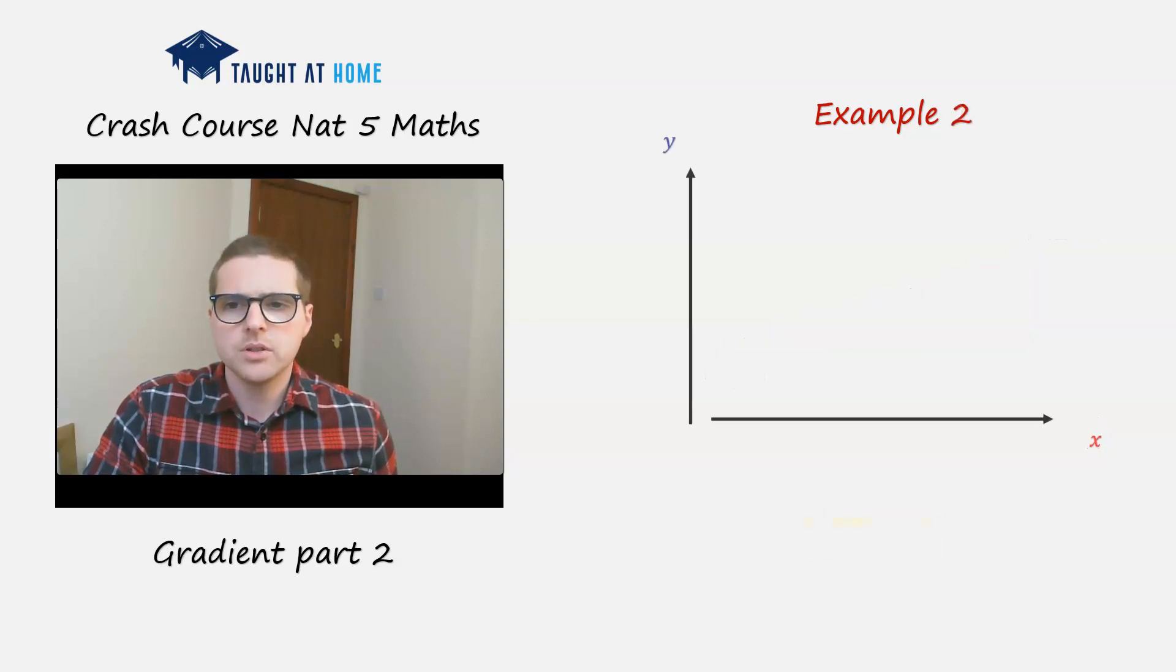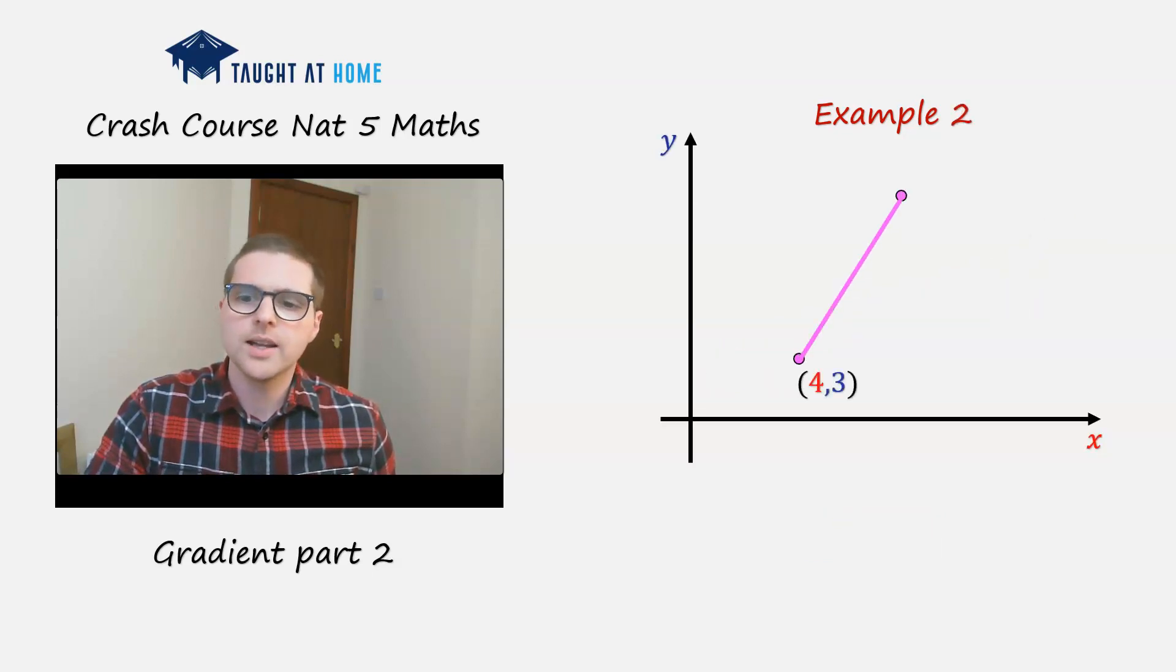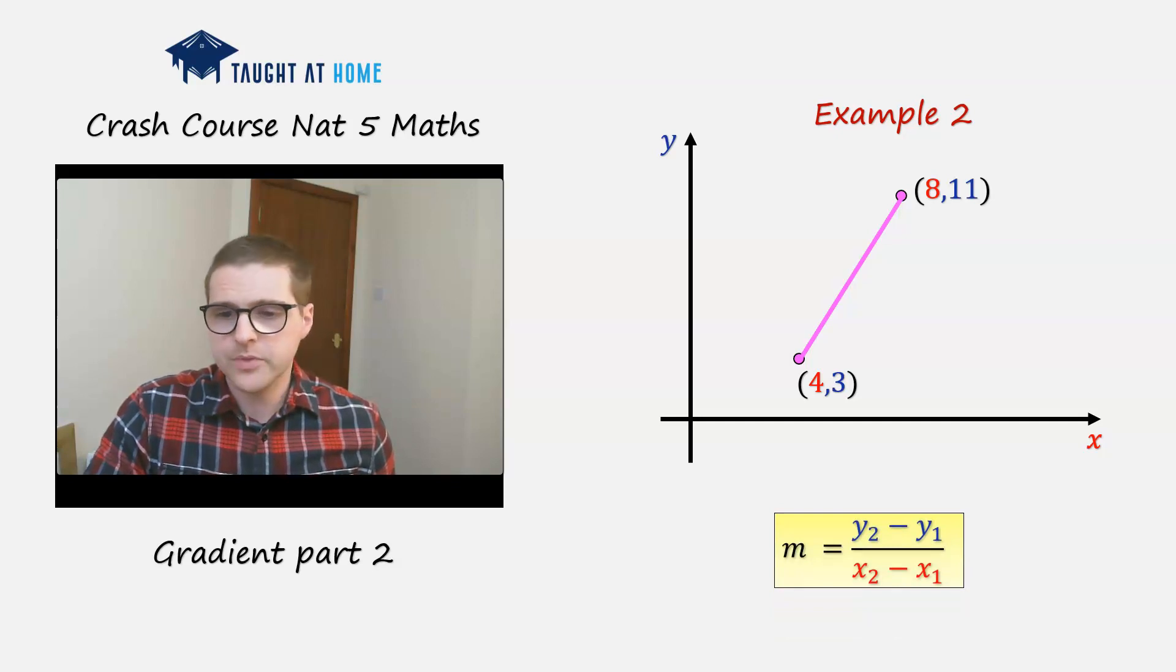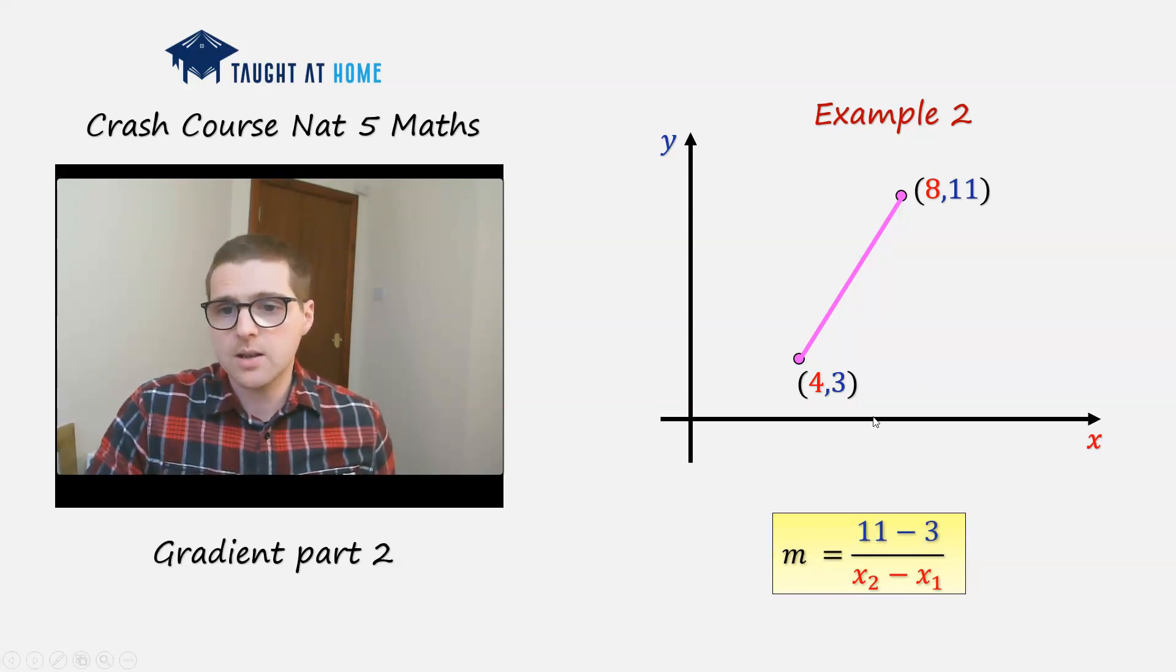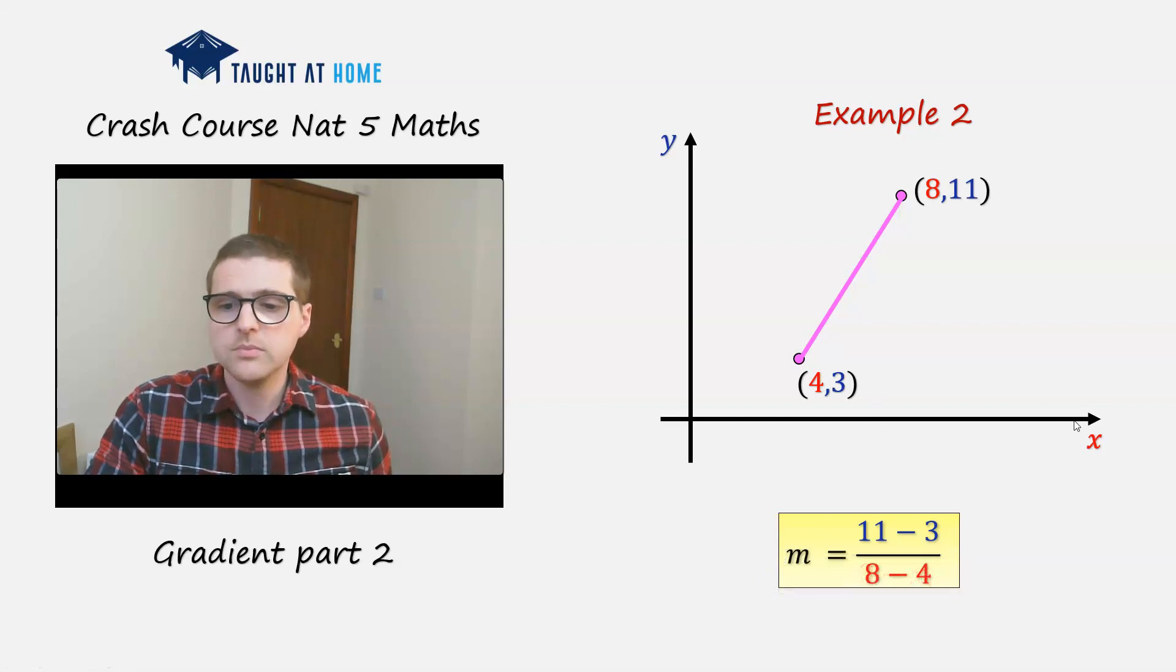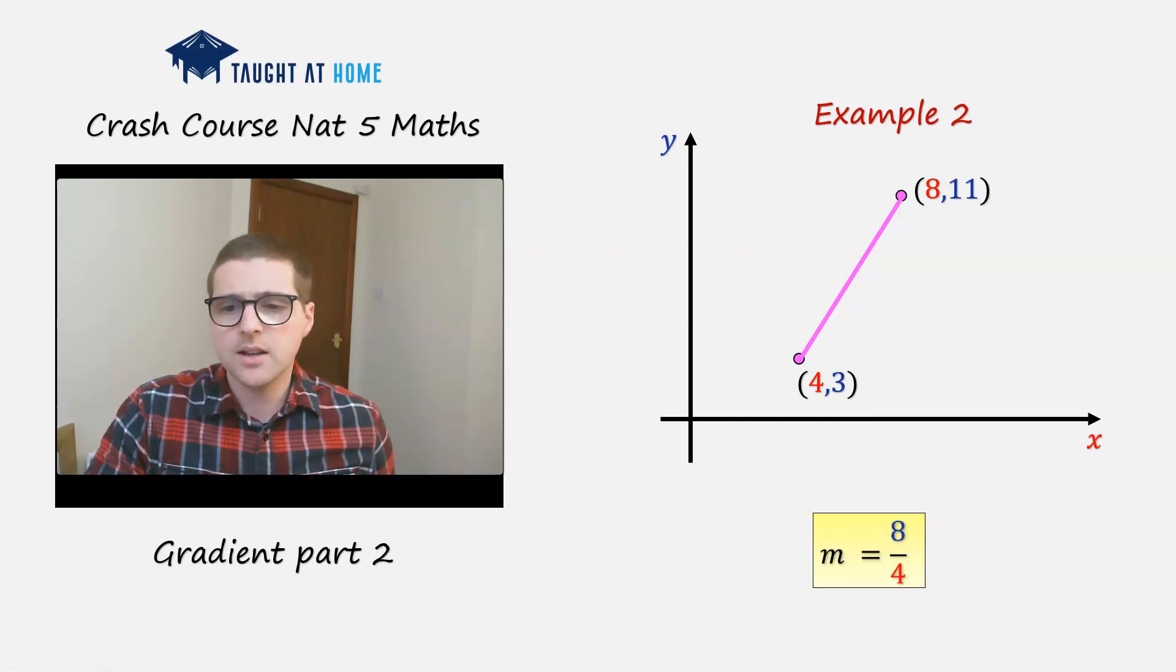Example 2, now we are given points 4, 3 and 8, 11. So we're asked to find the gradient using the gradient formula. Let's put 11 minus 3 for the change in y, and the change in x will be 8 minus 4. So 11 minus 3 is 8, and 8 minus 4 is 4. Therefore we'll have a gradient of 2.